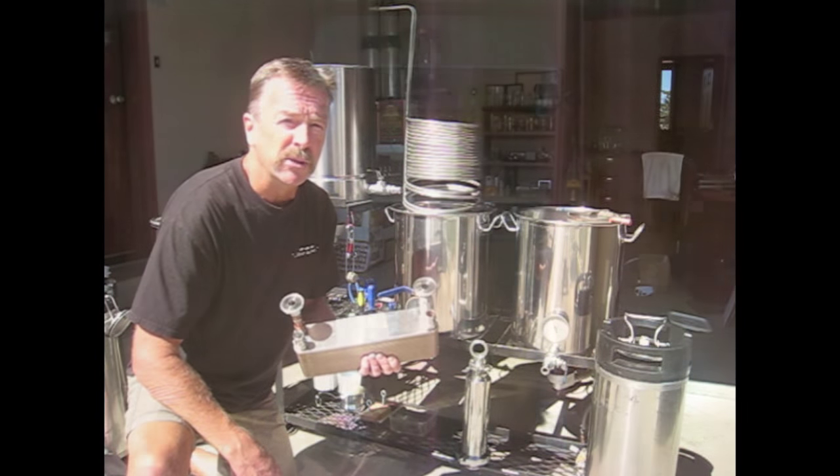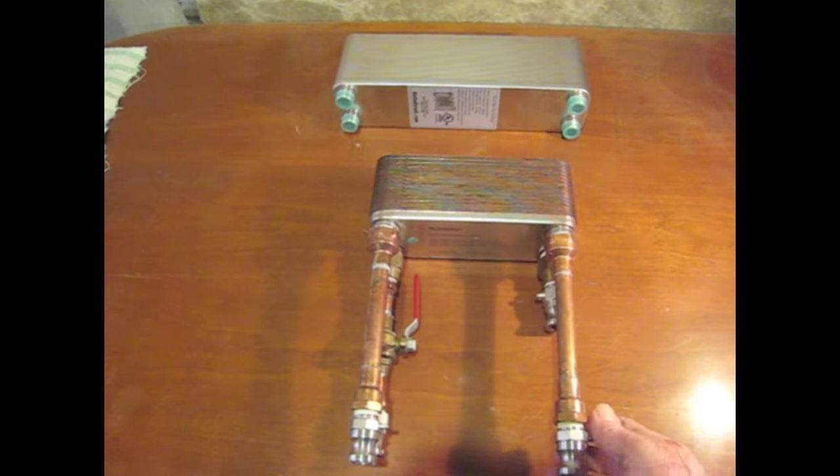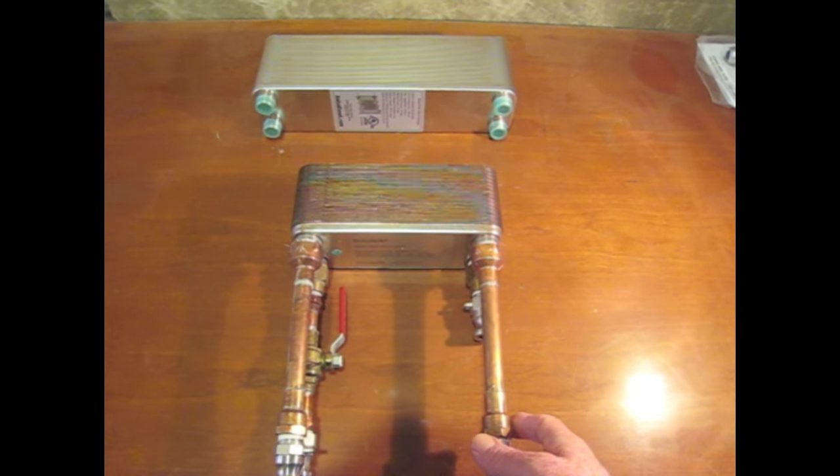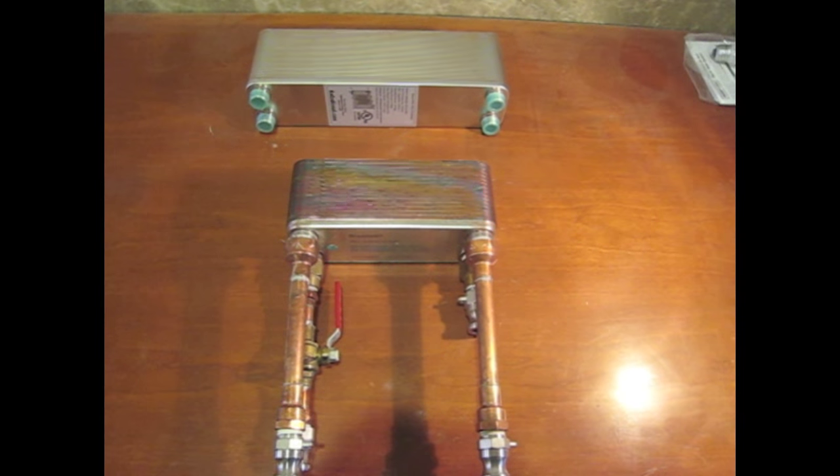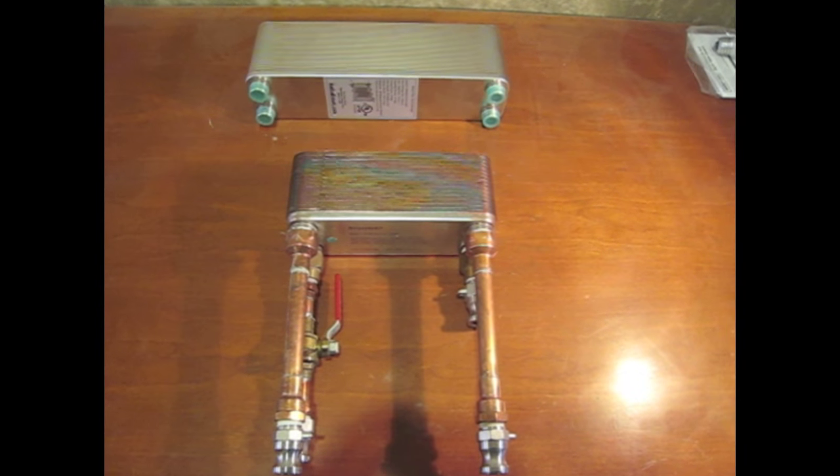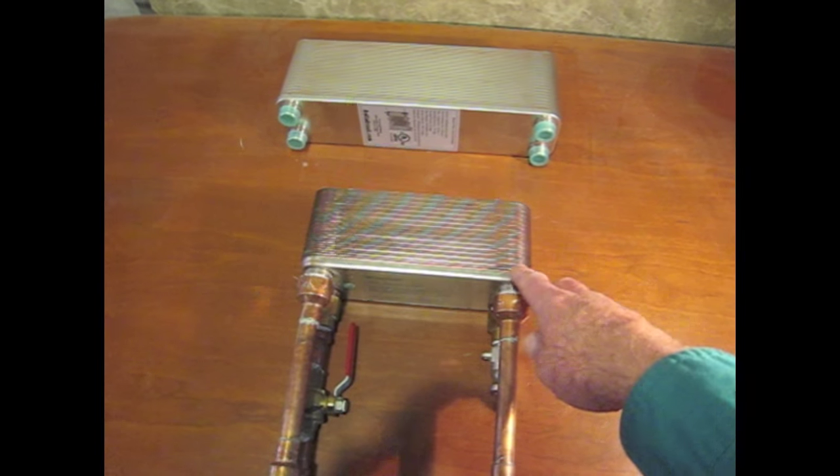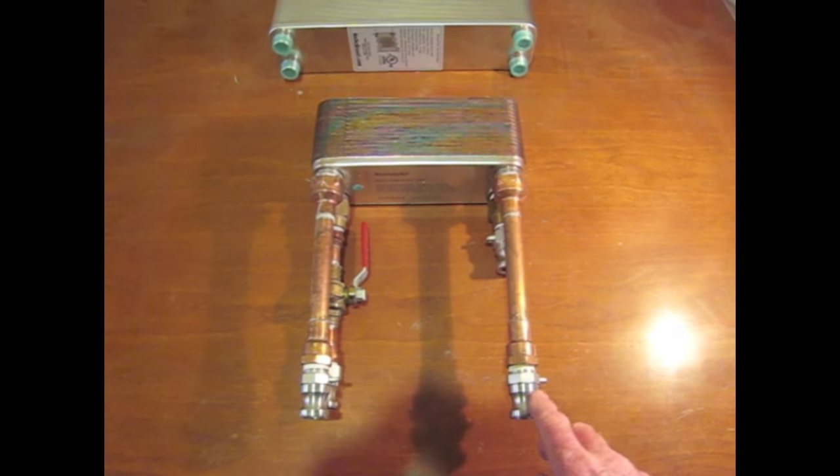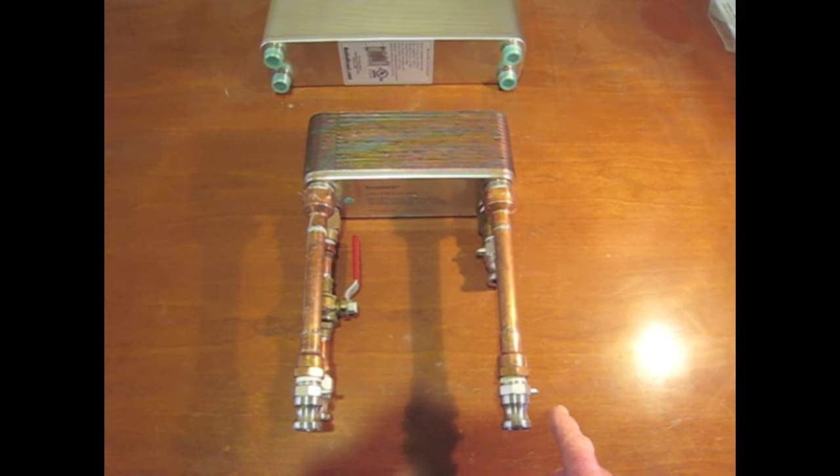So let's go ahead and get started and see what we got. The one in the front I've had for a number of years and used in my system. This is the typical kind of home brewer plate chiller that you'll find. It's about 12 inches long, 30 plates deep. And as you can see, I've added in the plumbing required to hook it up to my system.